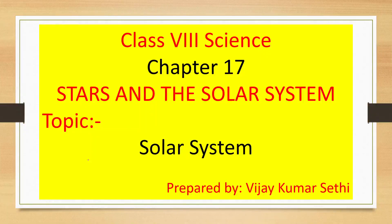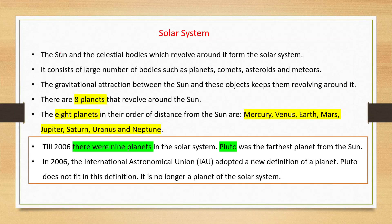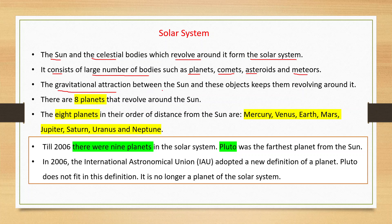Class 8 science chapter 17 starts in the solar system. The sun and the celestial bodies which revolve around it form the solar system. It consists of a large number of bodies such as planets, comets, asteroids, and meteors. The gravitational attraction between the sun and these objects keeps them revolving around it.